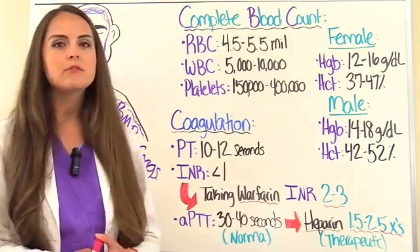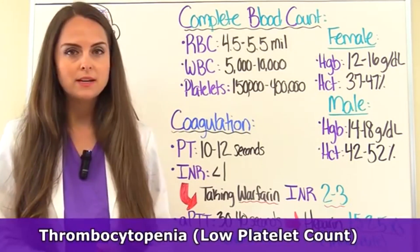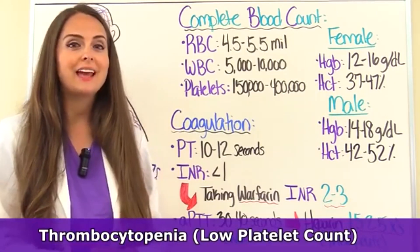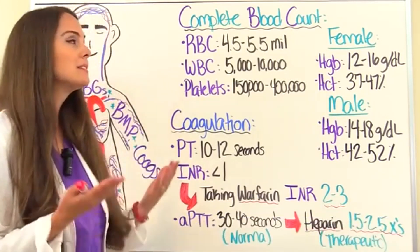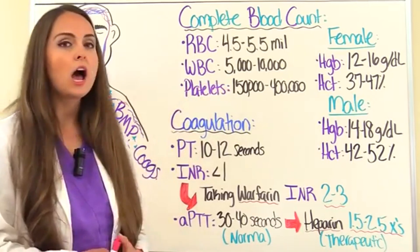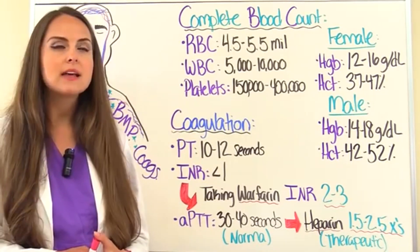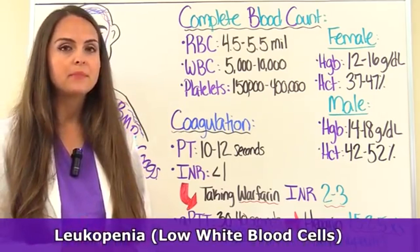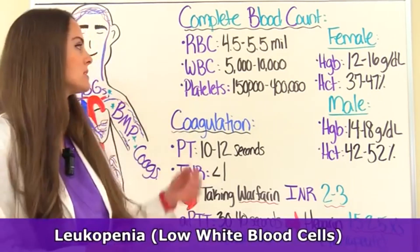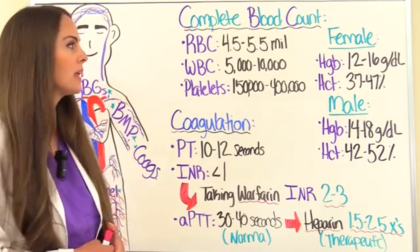Some terms you want to be familiar with: thrombocytopenia is a low platelet count, so that's going to be less than 150,000. A patient with leukopenia has a low white blood cell count — a count less than 5,000.